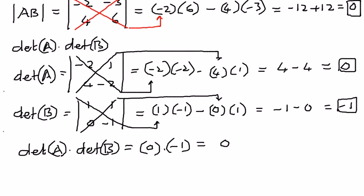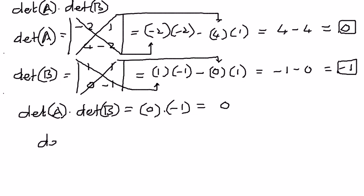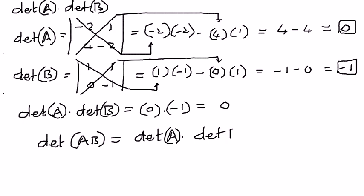This proves our point that the determinant of the product AB is equal to the determinant of A times the determinant of B. We have proved the first property successfully, and this is how we use the properties of determinants to solve simple example problems. In my next presentation, we will see more examples related to using the properties of determinants and solving them.